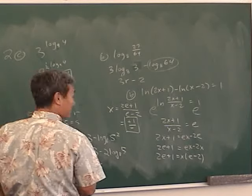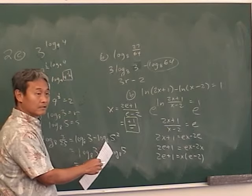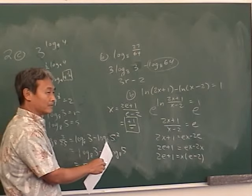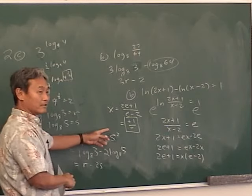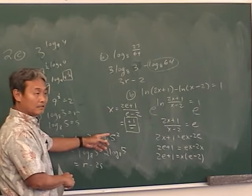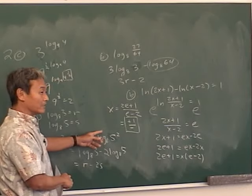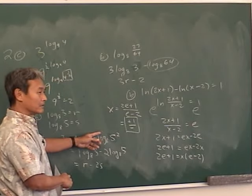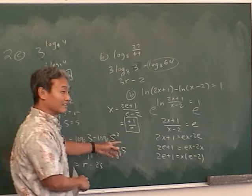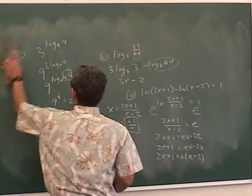I notice that a lot of you have trouble moving things from one side to the other. So many people. Factor out the X and you get E minus 2. So X equals, I'm going to go over here, X equals 2E plus 1 all over E minus 2. That's the answer. That looks like a Japanese character.